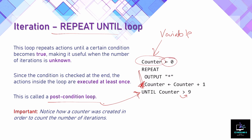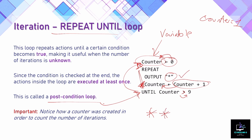The counter variable is set to zero. We go into the repeat loop, output one star, then add one to the counter — counter is now one. It then checks if counter is more than nine, which it isn't, so it goes back around and iterates again. Another star is output, counter becomes two, and so on. Once counter reaches 10, the condition is met, the loop stops, and the program continues to whatever code follows.